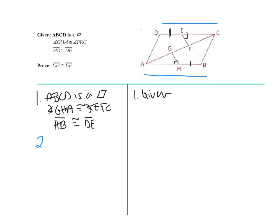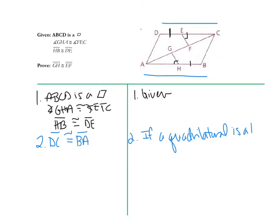If ABCD is a parallelogram, then we know DC is congruent to AB. Let's focus on the big picture — DC is congruent to BA. What you would say is: if a quadrilateral is a parallelogram — you can shorthand parallelogram with two parallel lines and then 'gram' — then opposite sides are congruent. If you're showing opposite angles are congruent, you start with the same phrase. Put a little star next to this to help you remember it.